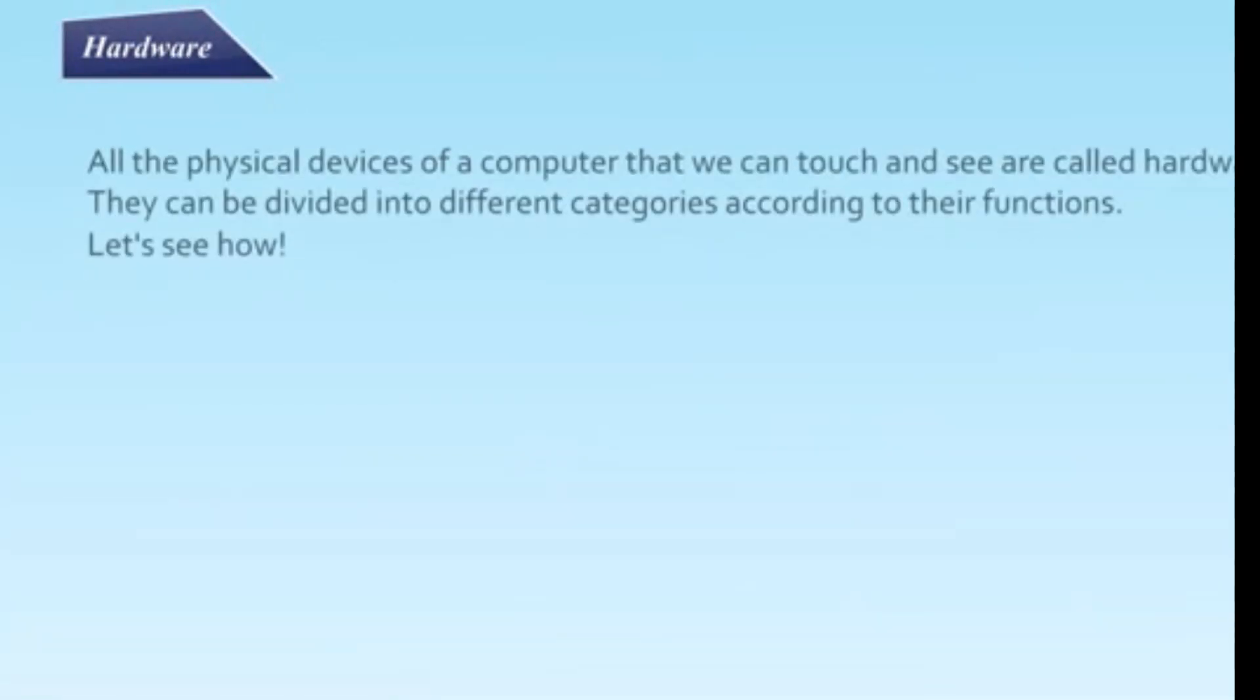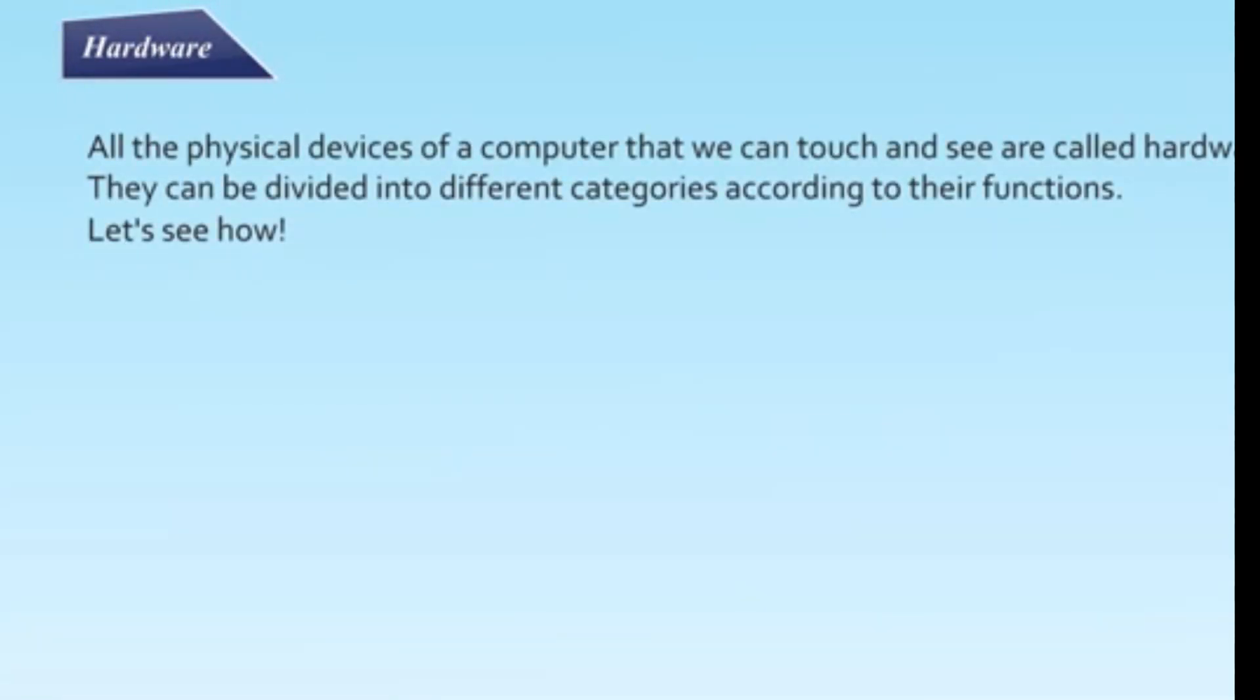Hardware. All the physical devices of a computer that we can touch and see are called hardware. They can be divided into different categories according to their functions. Let's see how.